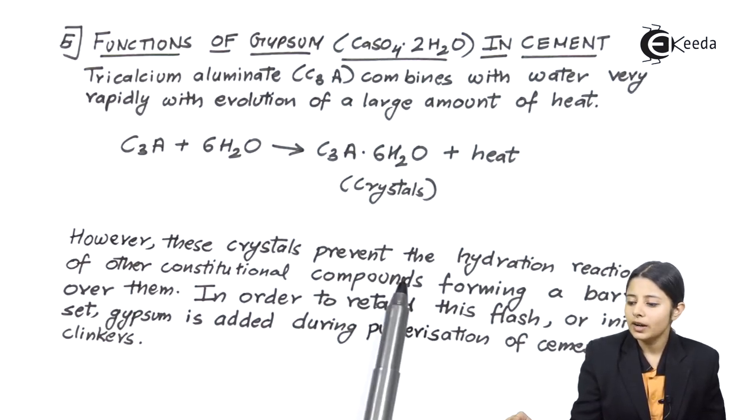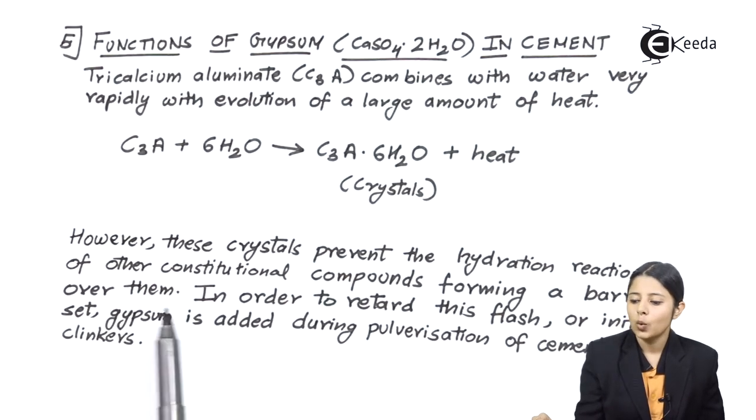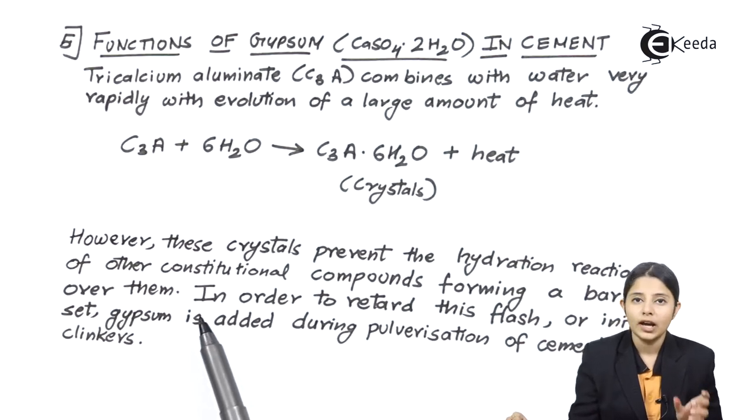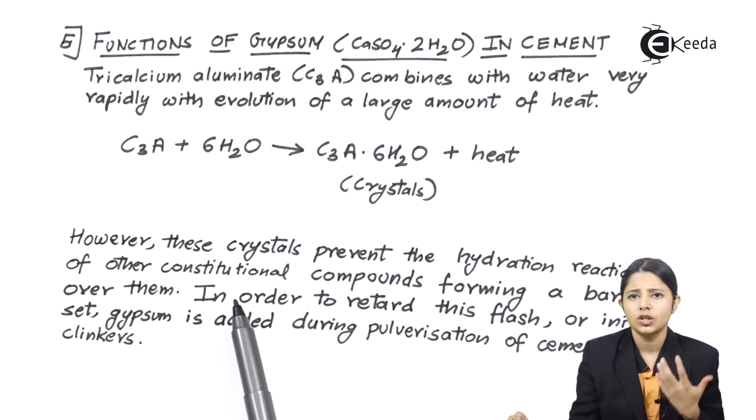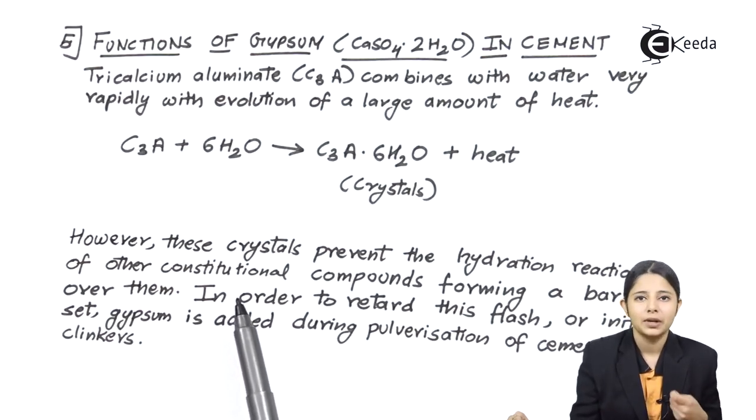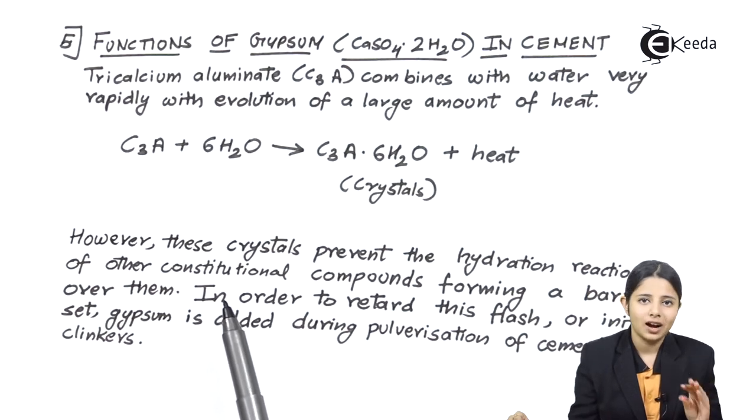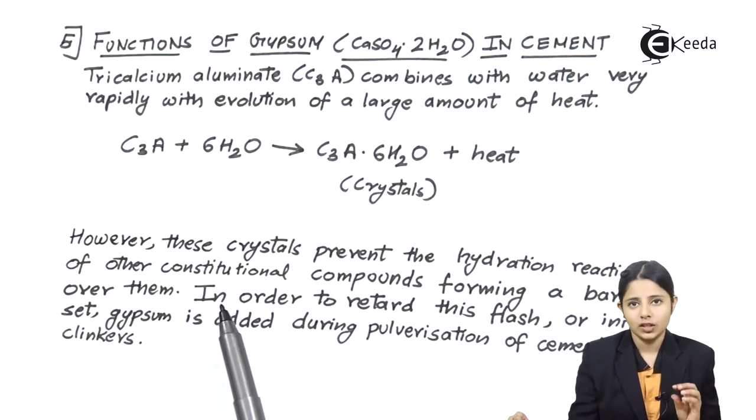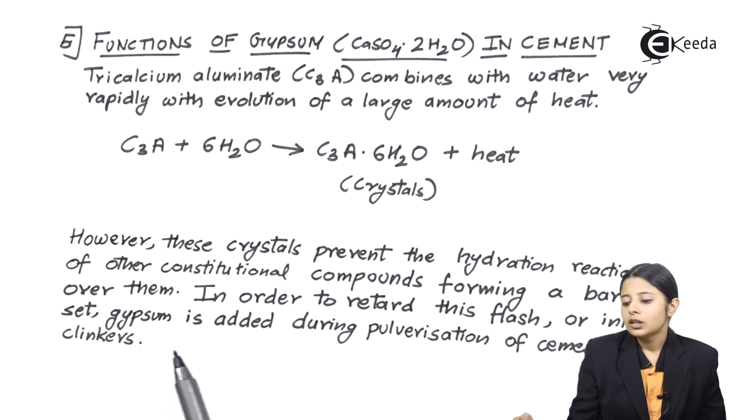However these crystals prevent the hydration reaction of other constitutional compounds forming a barrier over them in order to retard this flash or initial set gypsum is added during pulverization of cement clinkers. So now what happens is now over here I have talked about flash or initial set. Now what do I mean by flash set or initial set? Flash set and initial set are nothing but the cement paste. So after the cement paste is hardened the first thing that we see is the flash set or initial set.